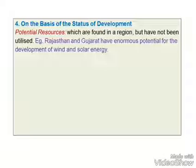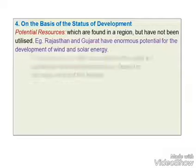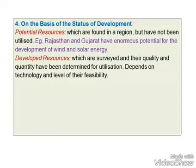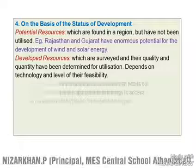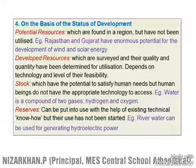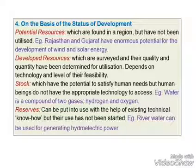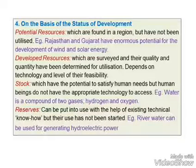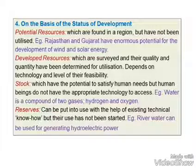The last classification of resources is on the basis of the status of development. First, potential resources — found in a region but not yet utilized. Second, developed resources — surveyed with quality and quantity determined. Third, stock — resources that have the potential to satisfy our needs but for which we do not have appropriate technology. Fourth, reserve — resources that can be put into use with existing technical know-how, but whose usage has not started yet.